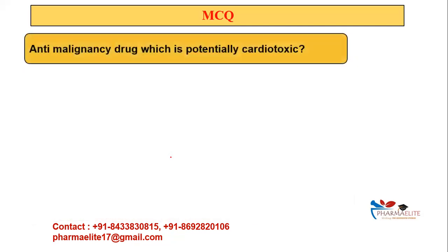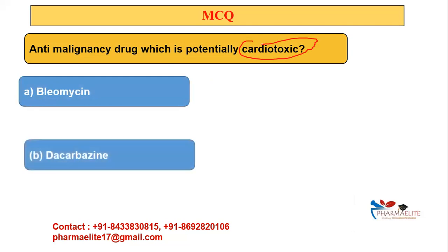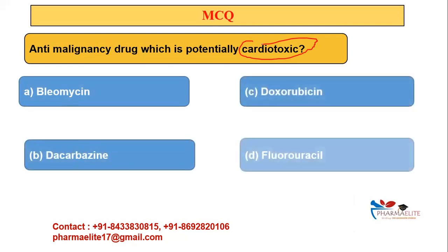Another important MCQ: 'Which anti-malignancy drug is potentially cardiotoxic?' Options: bleomycin, dacarbazine, doxorubicin, or fluorouracil. The answer is doxorubicin — none of the other drugs in the options are cardiotoxic. Remember: whenever cardiotoxicity and anti-cancer drug appear together, the answer is doxorubicin.